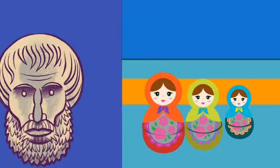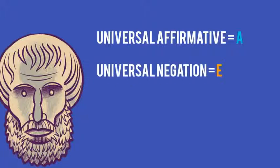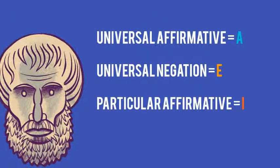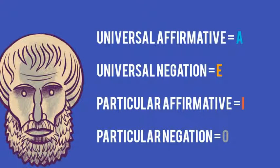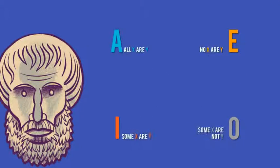Alright, so Aristotle tells us that there are four types of declarative statements: universal affirmative, universal negation, particular affirmative, and particular negation. And he labeled each one A, E, I, and O, respectively. So, a universal affirmative would be something like all X are Y, and a universal negation would be no X are Y, and a particular affirmative would be some X are Y, and a particular negation would be some X are not Y.